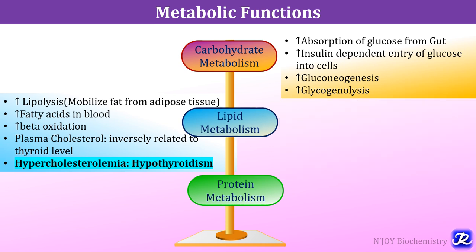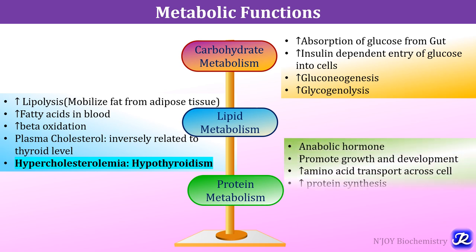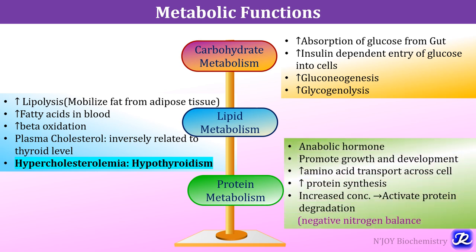Thyroid hormone affects both protein anabolism and catabolism, thereby maintaining protein metabolism. It is an anabolic hormone that promotes growth and development, increases amino acid transport across the cell and increases protein synthesis. However, increased concentration also activates protein degradation, resulting in a negative nitrogen balance.